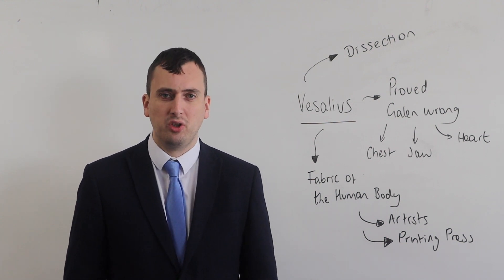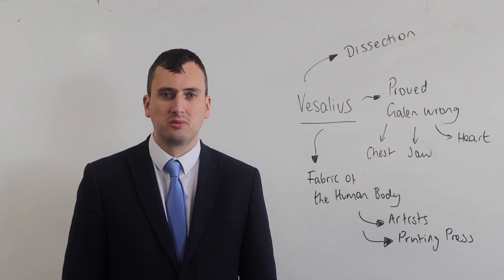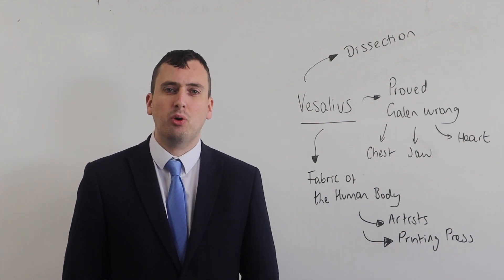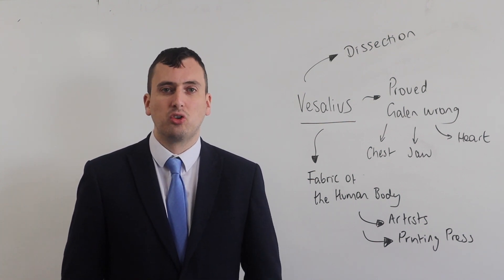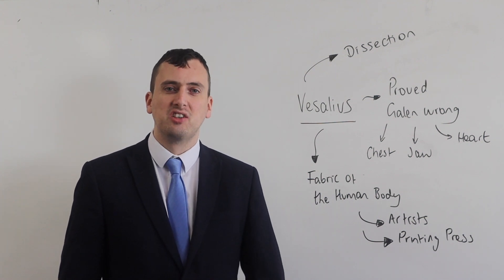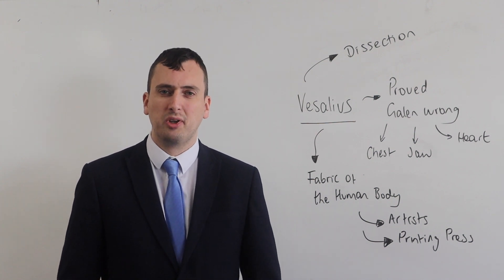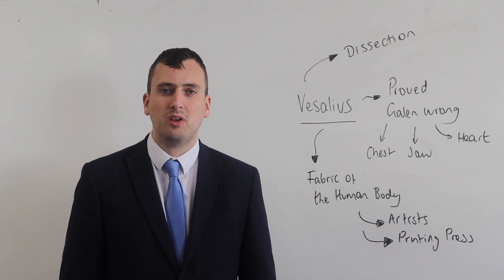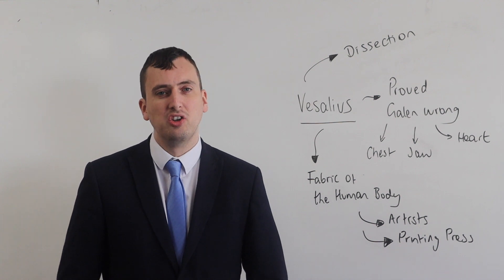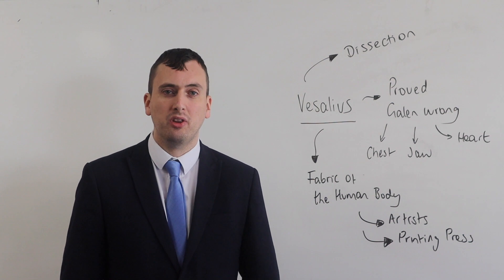The second reason why The Fabric of the Human Body is so important is that it's one of the first books which utilized the printing press. By having his book printed on the printing press, several copies were able to be produced very cheaply. This meant that Vesalius' work spread around Europe very quickly because the cost of books was now considerably cheaper. As a result, Vesalius' ideas — not only proving Galen wrong but encouraging doctors to challenge Galen — spread around Europe, and we start to see several people in the Renaissance make further contributions to medicine.